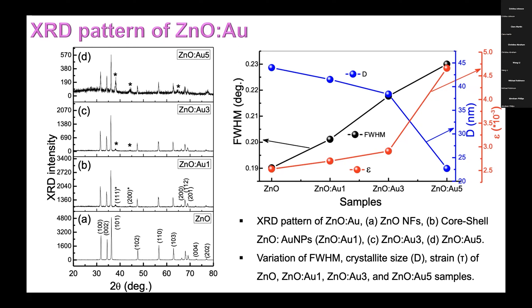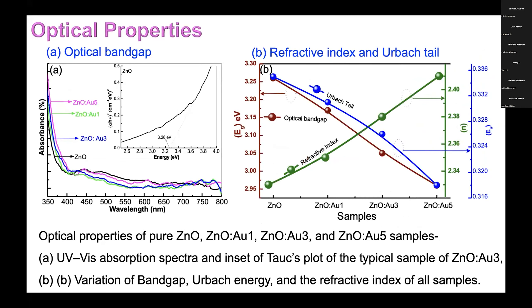The strain increases from 2.5×10⁻³ to 4.7×10⁻³. Variation of FWHM and crystallite size is shown for all five samples. For the optical properties — optical band gap, refractive index, and Urbach tail — the Tauc plot clearly indicates the band gap is 3.26 eV for pure zinc oxide. The band gap decreases from 3.26 to 2.94 eV. The Urbach energy decreased from 0.335 to 0.318 eV, and the refractive index increased from 2.33 to 2.41.